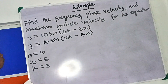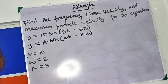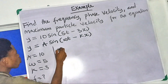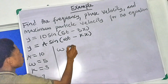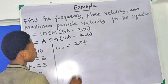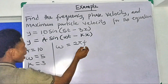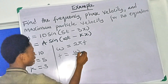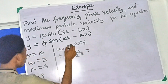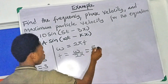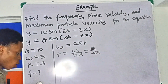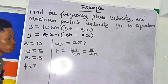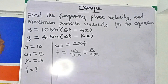We are asked to calculate frequency f. We know that ω = 2πf, so making f the subject: f = ω / (2π). Since ω = 5, we get f = 5 / (2π) Hz. In this case the answer was left in that format, so f = 5/(2π) is the frequency.